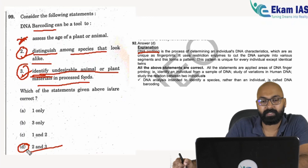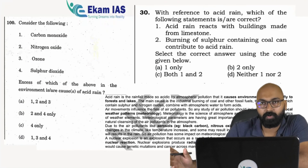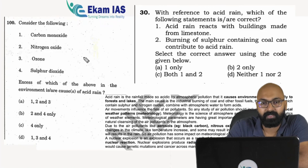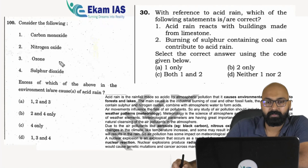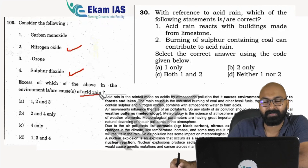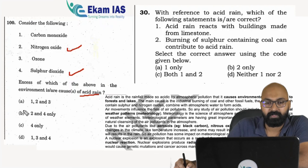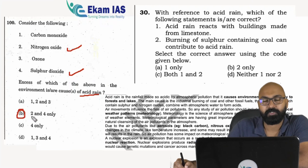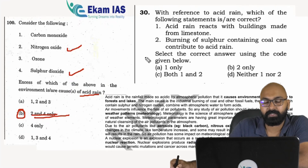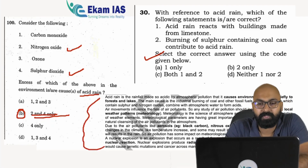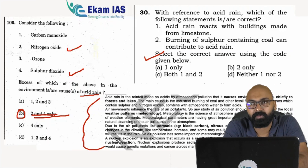The last question is about acid rain — a straightforward question asking about pollutants that cause acid rain. Nitrogen oxides and sulfur dioxide are the candidates that create acid rain. It is plain factual information discussed in NCERT textbooks as well, and also covered in our test series with detailed explanation on acid rain. The answer is option B.